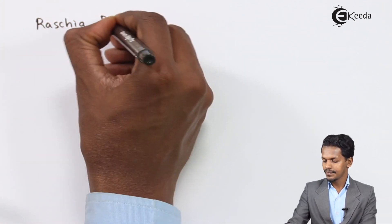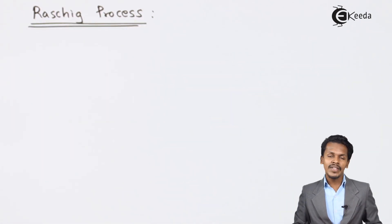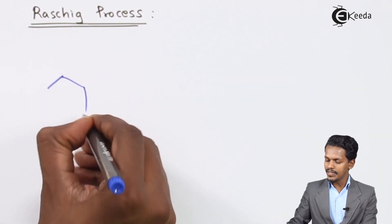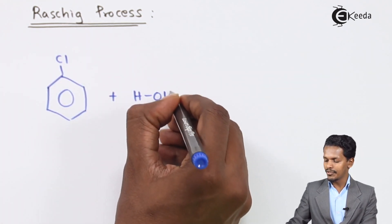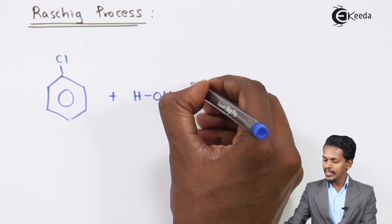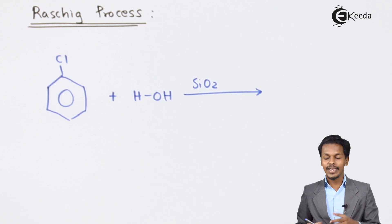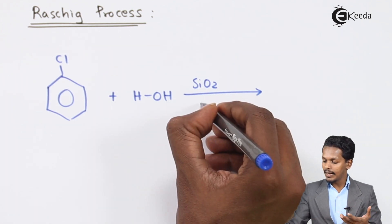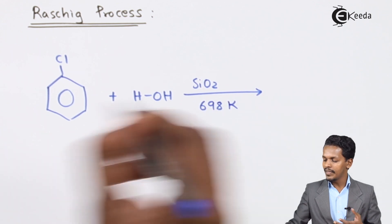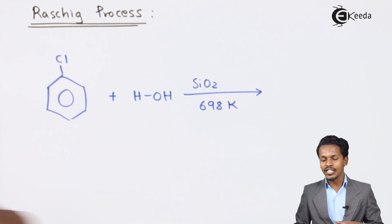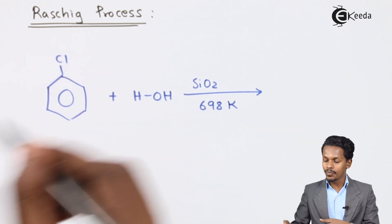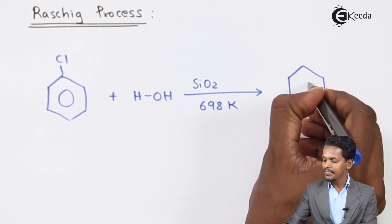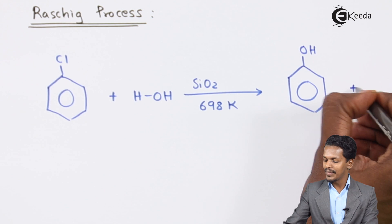The second method is the Raschig process, which is a one-step reaction. Here, one mole of chlorobenzene is treated with water (H₂O). The reaction proceeds in the presence of SiO₂ (silicon dioxide) as a catalyst and at a higher temperature of around 698 Kelvin. The Cl and H are removed as HCl byproduct, while the chlorine atom is replaced by an OH group.